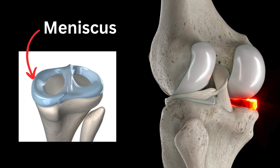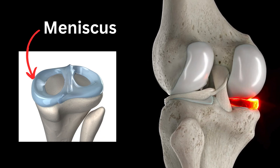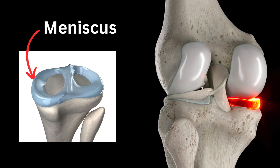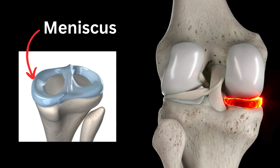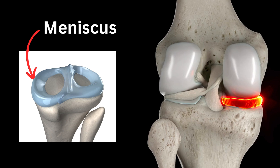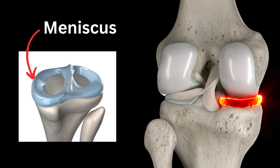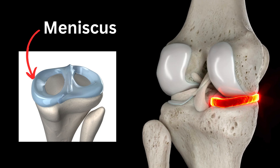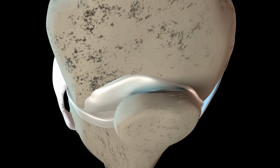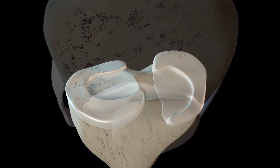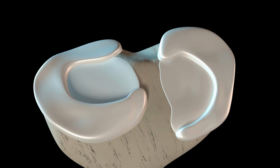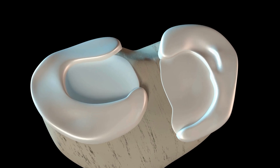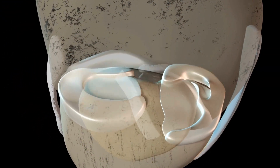Here you can see the inner or medial meniscus highlighted in red. The meniscus is a separate structure made of tough fibrocartilage, which helps cushion the knee and provide some stability. Sometimes the meniscus can tear, but understanding why it has torn and the type of tear is really important when it comes to thinking about treatment.